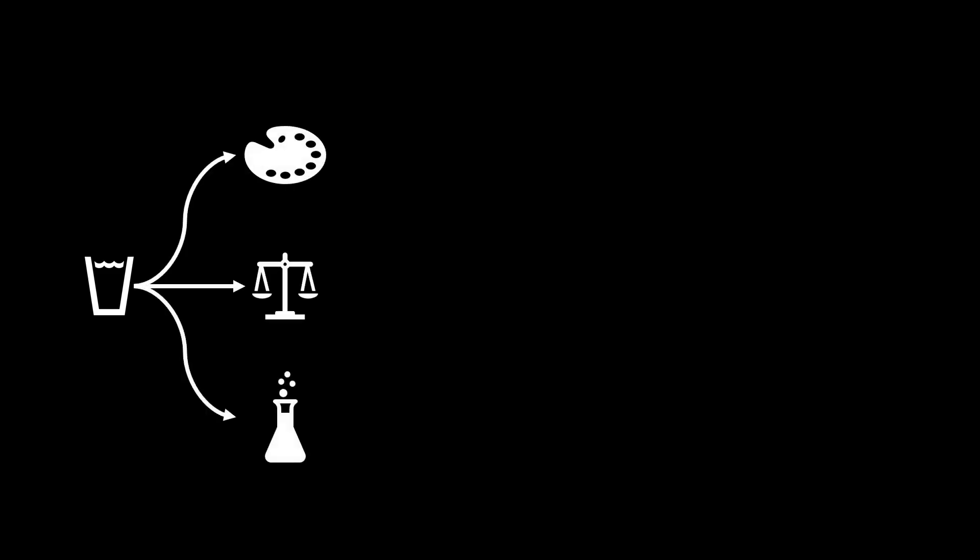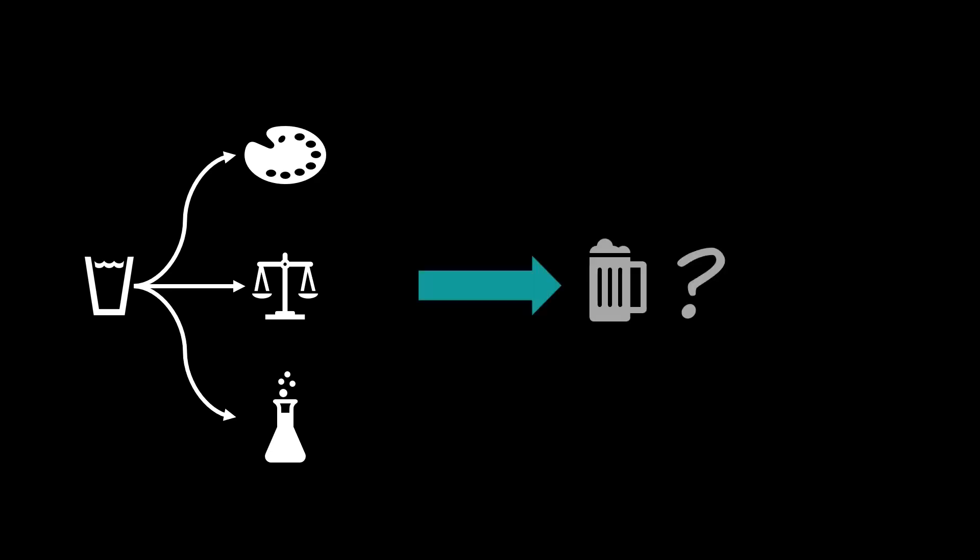Imagine you are given a liquid along with certain properties of the liquid, like its color, its density, and some other chemical properties. Based on these properties you want to answer an important question: is this liquid beer, or not?